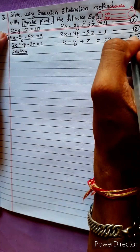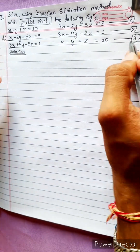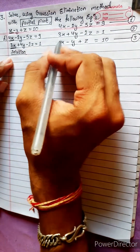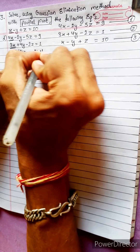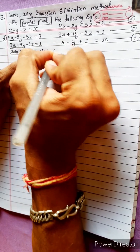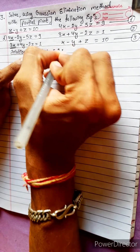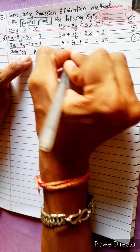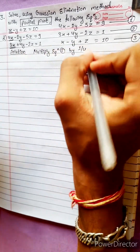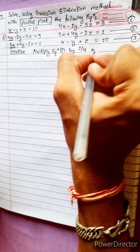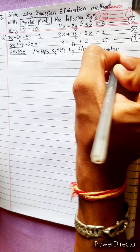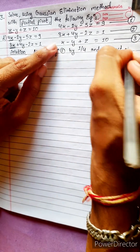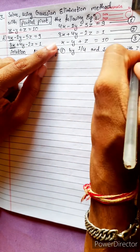First, solving Equation 1 and Equation 3. We multiply Equation 1 by 1/4 and subtract from Equation 3.